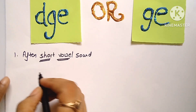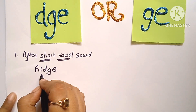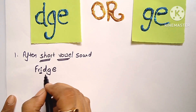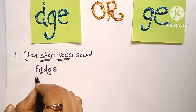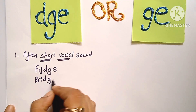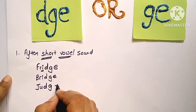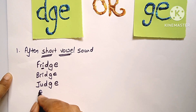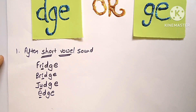Let's say for example: fridge. See, here there is a vowel before the J sound, and that vowel has a short sound — fridge. Next: bridge. Same pattern. Next: judge. Edge. इन सब में आपको vowel की short sound सुनाई देगी, और vowel के just बाद J की sound सुनाई देगी.